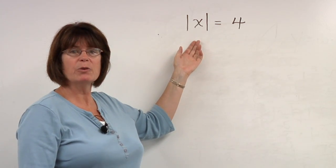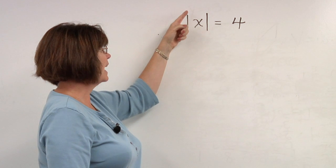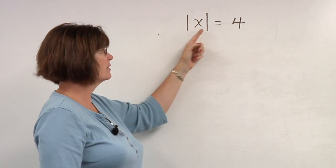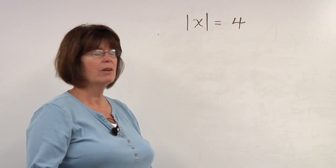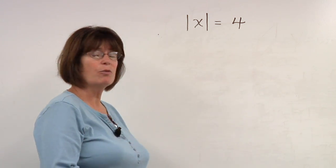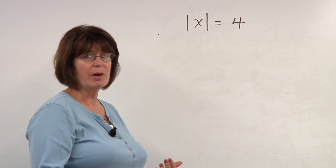So if we have an absolute value equation such as the absolute value of x is 4, we want to know what number or numbers would give a distance of 4 from zero on the number line.